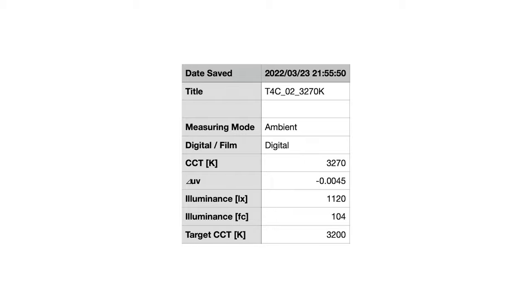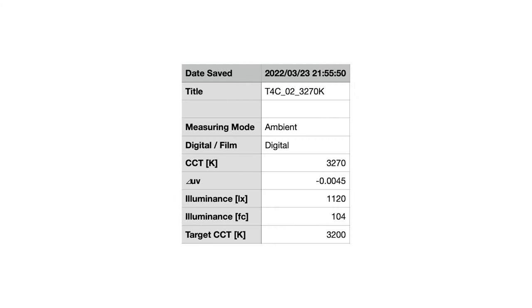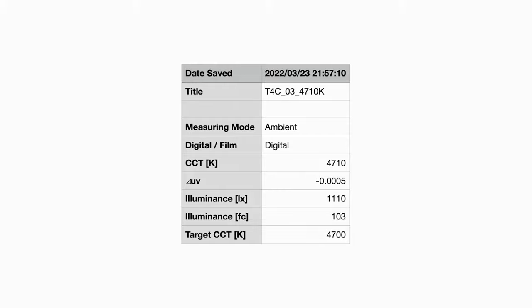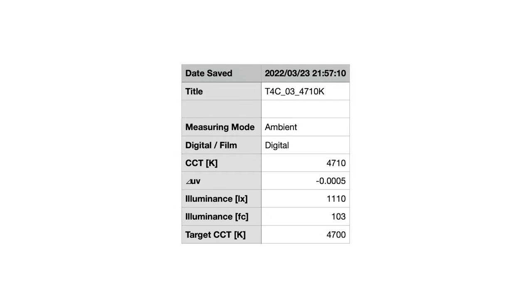And here's a test with a target of 3200K. Also, a very solid Kelvin result, 3270K with a slight hit to overall output when compared to the previous 5600K targeted test. And now for a test somewhere in the middle of that range at 4700K. Again, spot on with that Kelvin target, and the output remains in a similar spot to the 3200K test.